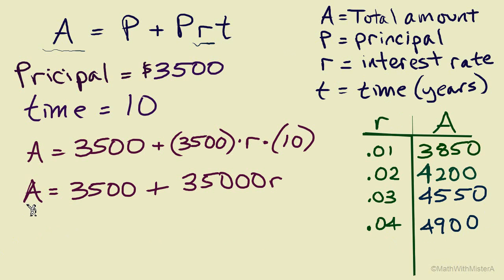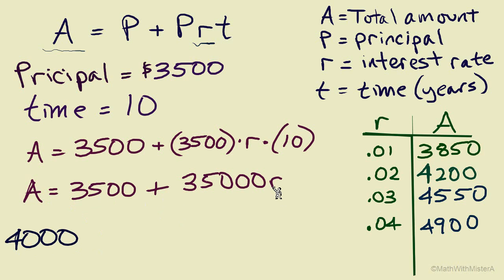This formula is solved for A, which is useful for substituting a value of rate to calculate the final amount. But what if we wanted to do the opposite — figure out a rate to get a specific final amount? For example, what if we wanted to end up with exactly $4,000 in this account — what interest rate would get us there? Looking at our table, as the interest rate increases the total amount increases, so $4,000 would fall between $3,850 and $4,200, meaning the interest rate is between 1% and 2%.